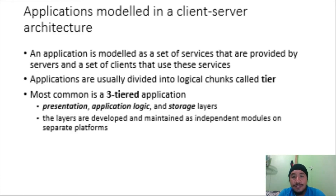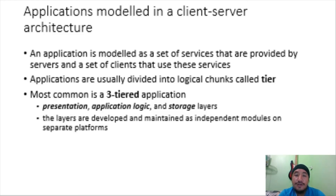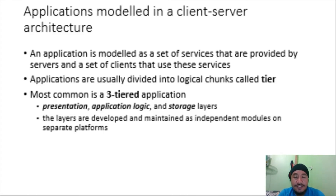Looking at applications modeled in a client-server architecture: an application is modeled as a set of services provided by servers and a set of clients that use these services. Applications are usually divided into logical chunks which we call tiers. The most common is a three-tiered application. In a three-tiered application we have three layers: the presentation layer, the application layer or application logic, and the storage layer. These layers are developed and maintained as independent modules on separate platforms and systems.